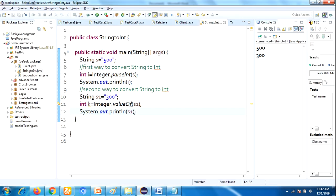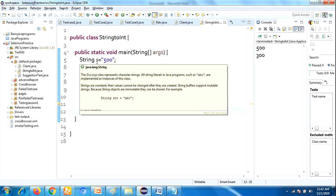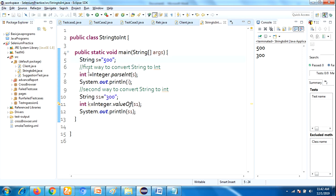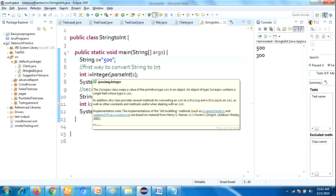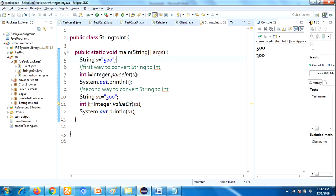So I already written the code here. Here class name is StringToInt and I have declared string literal String s equals 500. The first way to convert string into int is by using Integer class dot parseInt, I am just parsing the reference variable s.